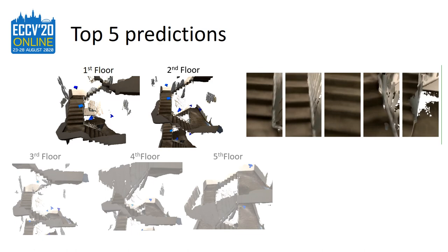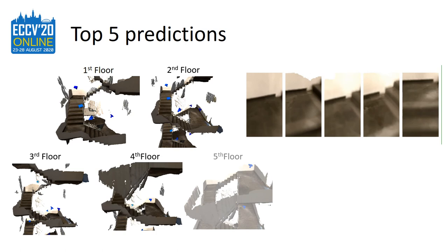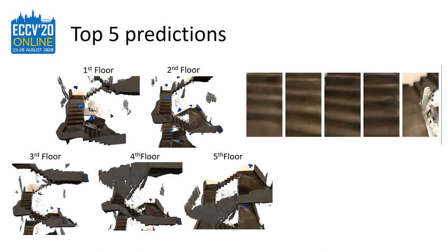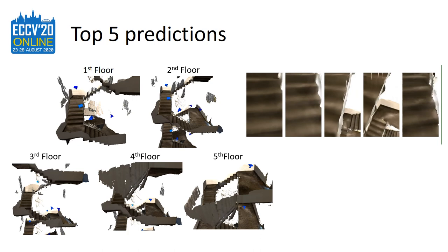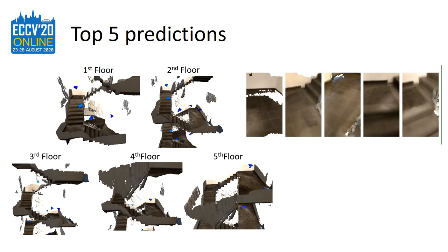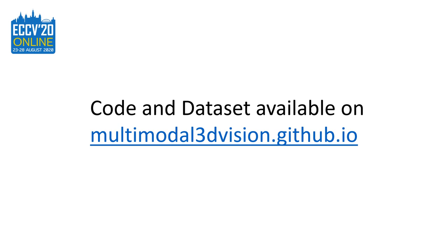As an example of our model's performance, we visualize the top five predictions according to their uncertainty estimation by rendering the 3D reconstruction of the scene using the predicted camera pose. In summary, we provide a method to infer continuous multimodal distributions that provide a set of pose hypotheses as well as uncertainty values for each prediction. We provide a PyTorch implementation of our method as well as the created dataset online. Thank you for your attention.